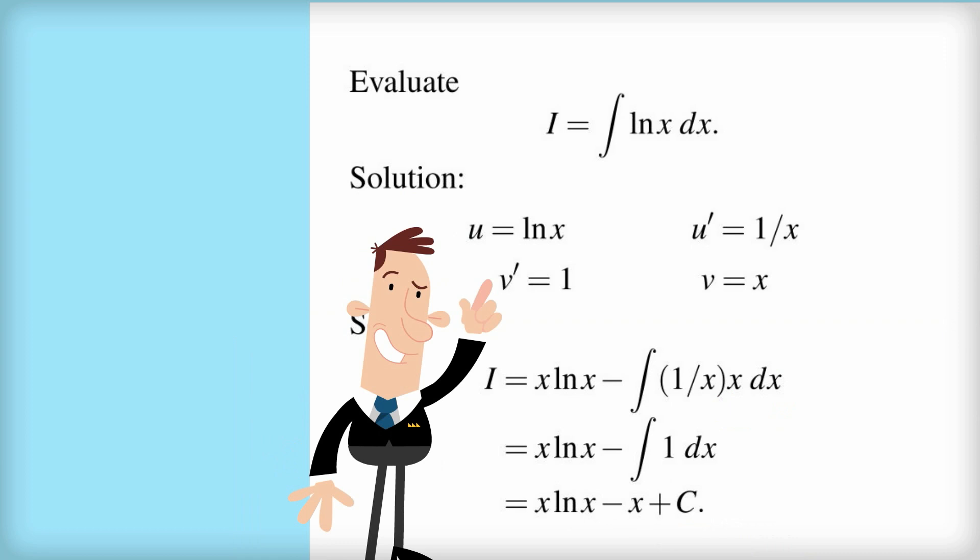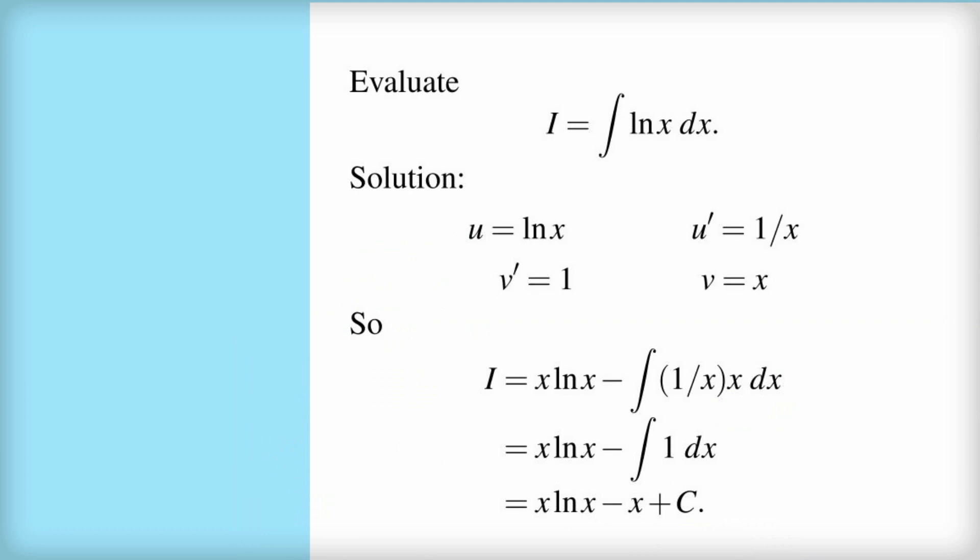And so to calculate I, remember we take u times v, which is x log x. Put the negative sign, and then the integral of the two things that we've produced, the u dash and the v. So that's 1 on x times x.